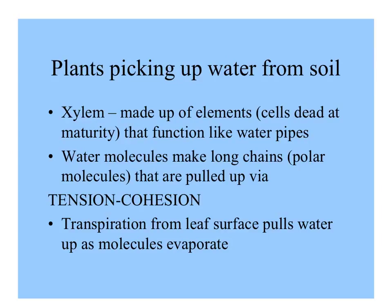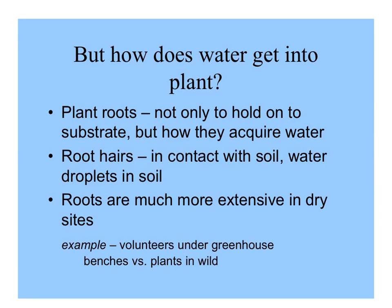A plant growing in the soil has to get water into its internal plumbing — the xylem — which is made up of cells dead at maturity. The water molecules in the xylem, these skinny tubes, are pulled up in long chains by tension-cohesion. Evaporation from the leaf surface pulls water up as those molecules evaporate. The plant roots pick up water, and root hairs greatly increase their surface area to be in direct contact with the soil and the water droplets that adhere to soil particles.